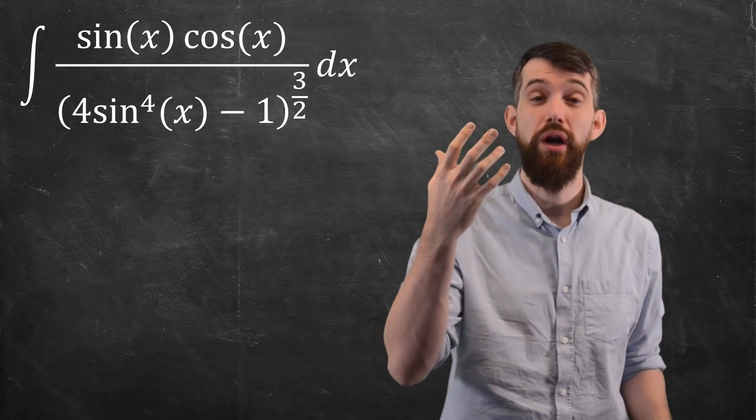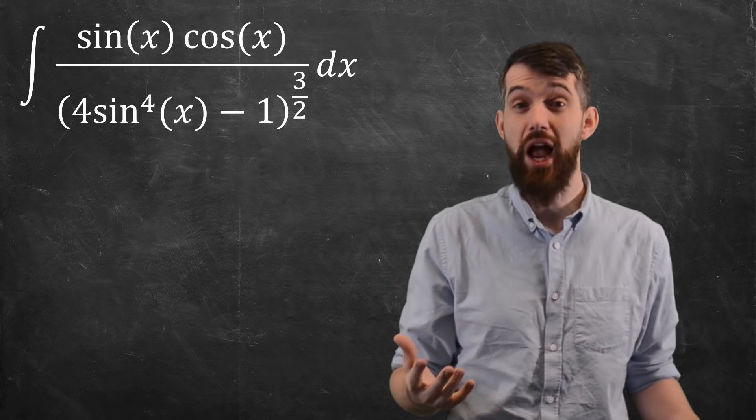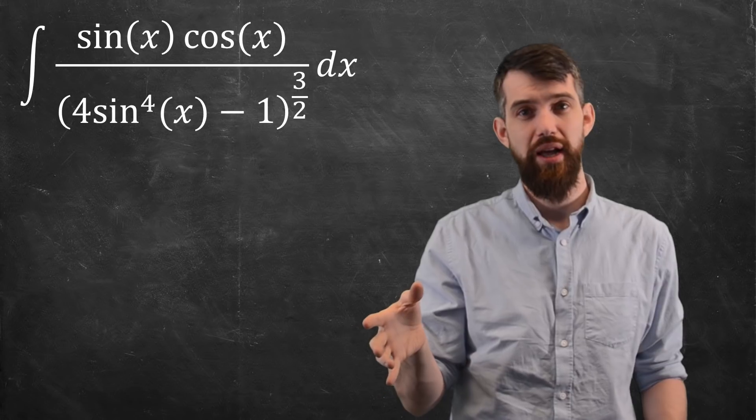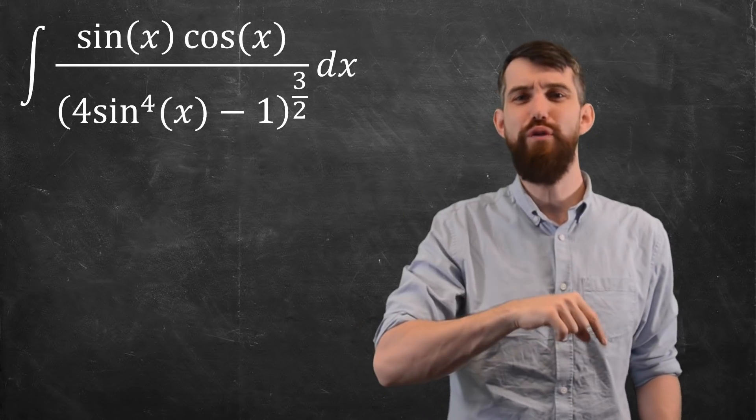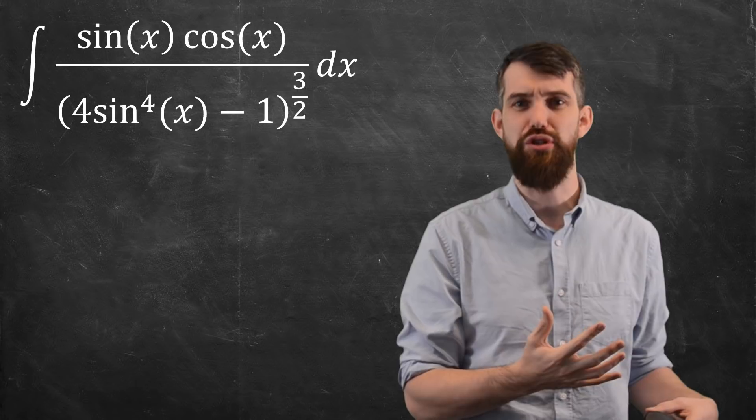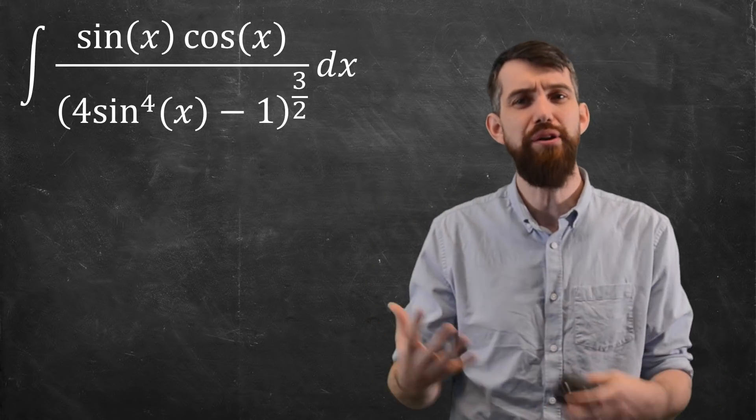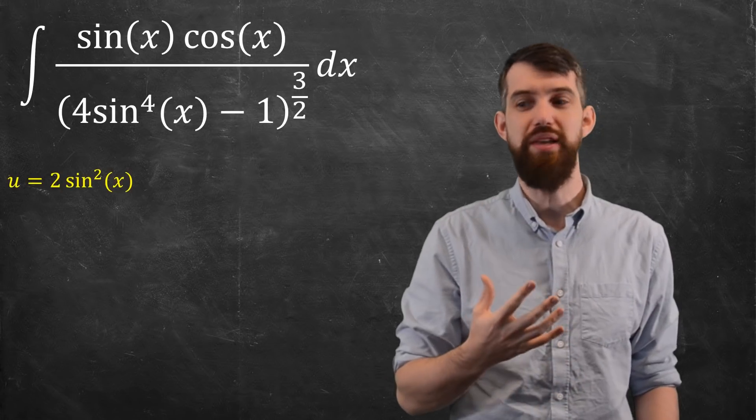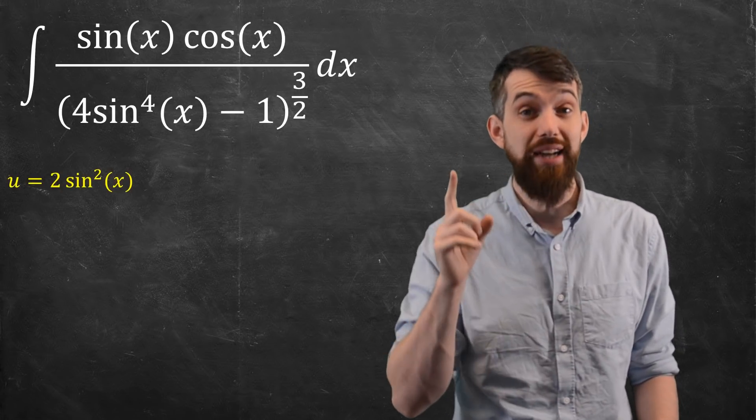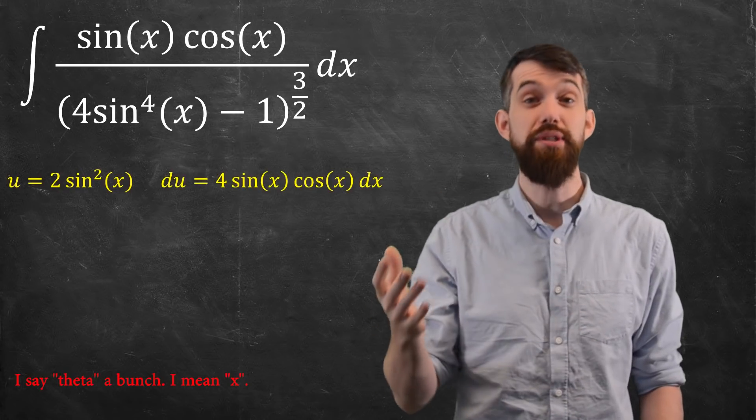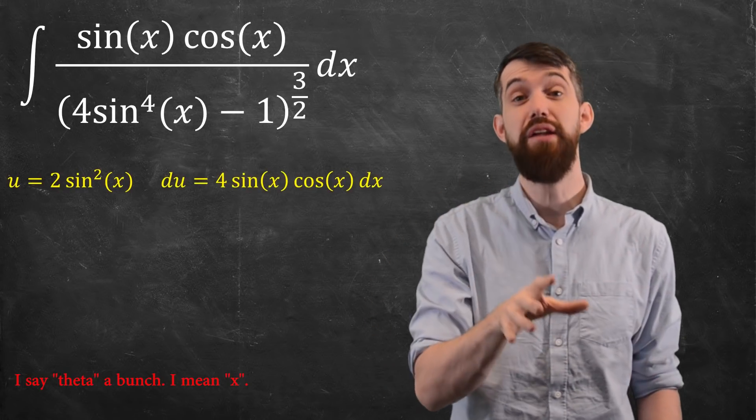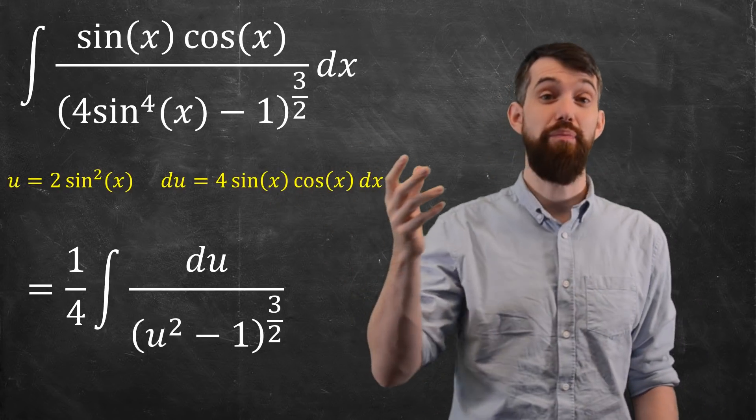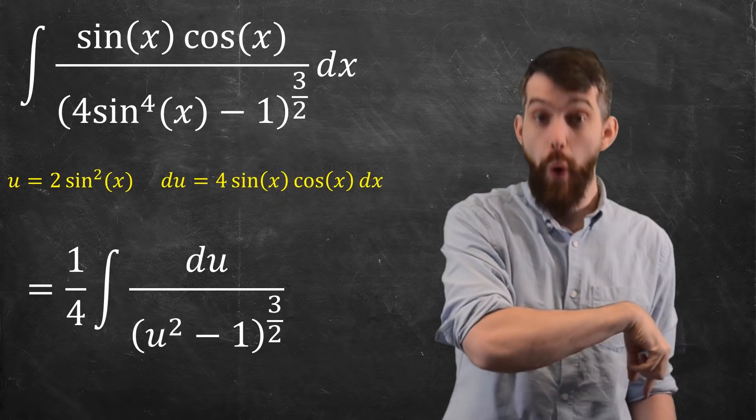Now there's a couple choices here. What about u equal to sine of x? There's certainly a lot of sine of x's. There would be a u to the fourth on the bottom, a u on the top. The cosine would become the du. But then I'd still have a u to the fourth on the bottom. It's not quite right for trigonometric substitution. We want a u squared on the bottom. So what if instead I do this? I will set my u to be equal to twice sine squared of x. Then my du is going to be four times sine of x cosine of x.